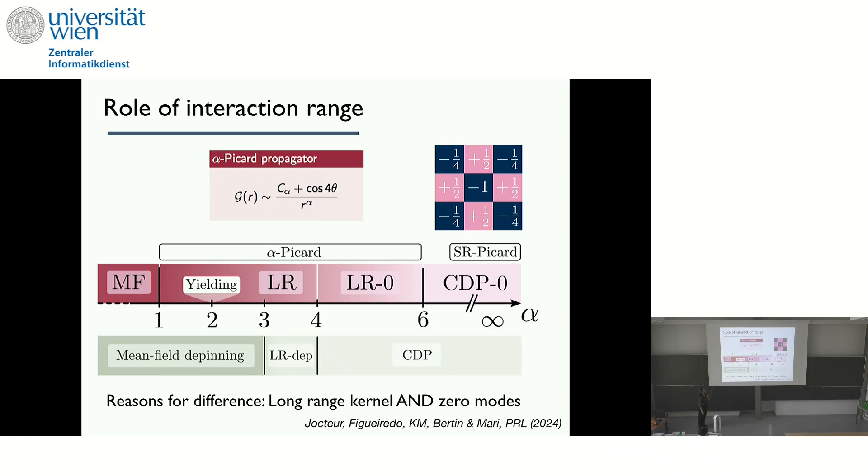And the reason for this, we found, is not... So the reason for the difference is not only the long range, but what makes CDP different from CDP0 is that we have the need for the mechanical problem to have a propagator, which is preserving mechanical equilibrium. So the divergence of the stress needs to be zero. And for this, what we need to impose is that each line here sums up to the same value, zero, in each column as well. And that means there are zero modes in the Eshelby propagator. And this actually leads also to these avalanche dynamics and slip lines, et cetera. And this is the reason for having another universality class, even in short, even in next-neighbor interactions.